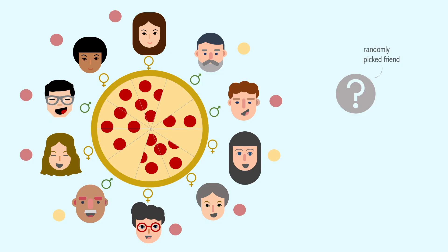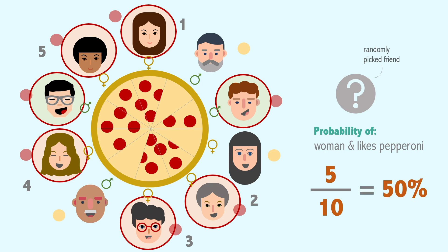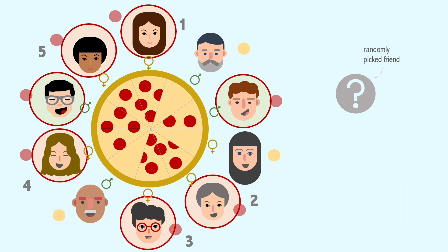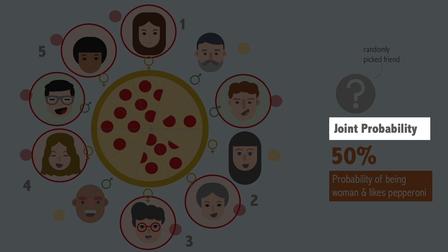We can also ask ourselves: if we were to choose a friend at random from this population, what is the probability that the friend is both a woman and enjoys pepperoni on pizza? Recall that in Elle's friend group, there are seven friends who prefer pepperoni, and five of them are women and two of them are men. This means there are five out of ten friends who are both women and prefer pepperoni — in other words, 50% of the friends are women and prefer pepperoni. So if we were to pick someone at random, the probability that this person is both a woman and prefers pepperoni is 50%. We call this type of probability joint probability.